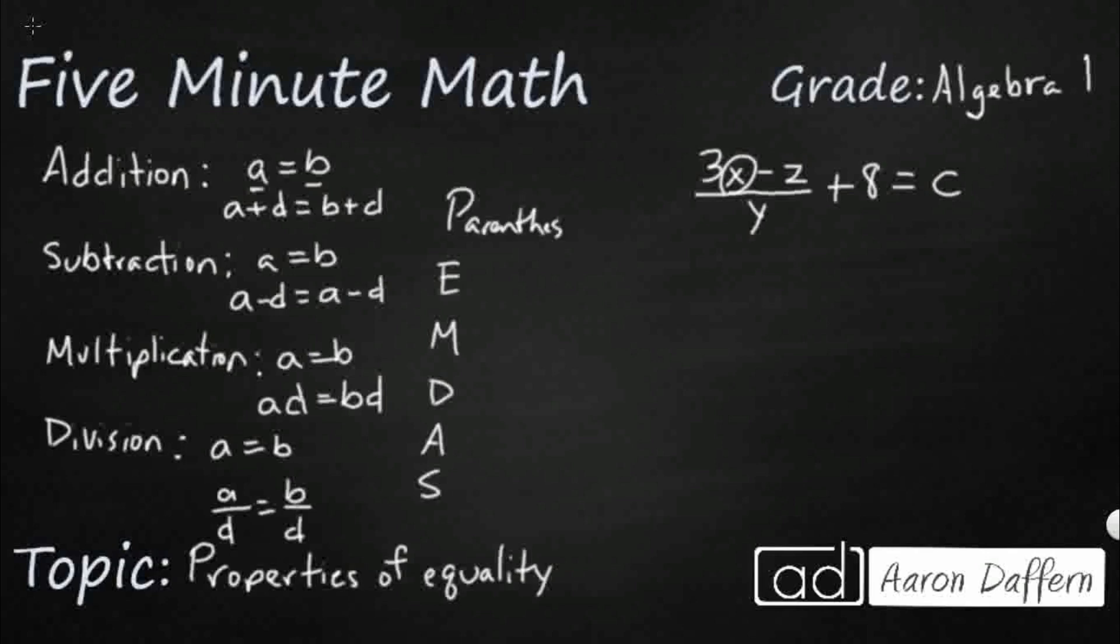So parentheses, exponents. Now we need to remember that multiply and divide are inverse operations. So they can be done in either order. Same with add or subtract. And when we're trying to untangle something like X, you go from the bottom up because those are the weakest operations. So if I'm wanting to get that X all by itself on the left side, I'm looking for any way I can add or subtract.